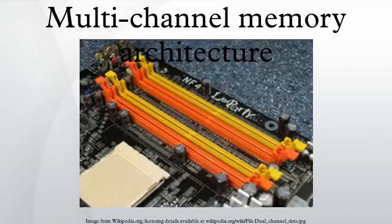When two memory modules are installed in a triple-channel system, the architecture will operate in dual-channel mode. Quad-channel DDR4 has replaced DDR3 on the Intel X99-LGA2011 platform, while DDR3 quad-channel architecture is used in the AMD G34 platform and the Intel X79-LGA2011 platform. AMD processors for the C32 platform and Intel processors for the LGA1155 platform use dual-channel DDR3 memory instead. The quad-channel architecture can only be used when all four memory modules are identical in capacity and speed. With two modules installed it operates in dual-channel mode, and with three modules installed it operates in triple-channel mode.